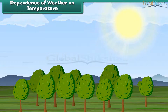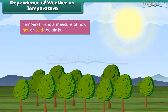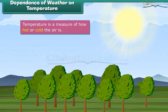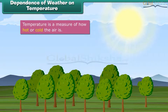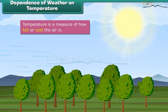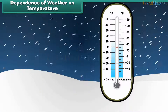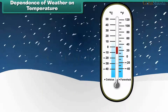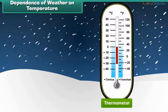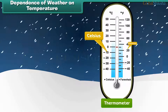We all know that temperature is a measure of how hot or cold the air is. It depends upon the energy it receives from the sun. Temperature is measured with the help of a device called a thermometer, and it is calculated in degrees Celsius and degrees Fahrenheit.